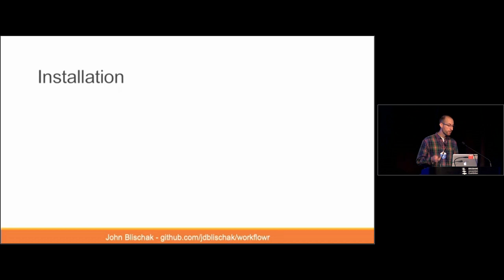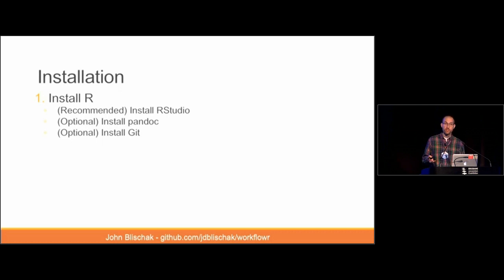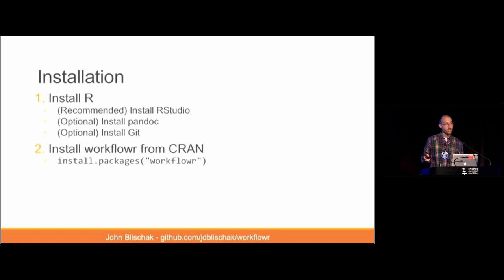To try out WorkflowR, in addition to R you'll need the document converter pandoc, which is easily installed if you've already installed RStudio — it comes shipped with it. Note that installing Git is optional, because the git2r package comes bundled with libgit2, a pure C implementation of Git, so you don't even have to install Git on your computer to test this out. You can install WorkflowR from CRAN. We have lots of unit tests and continuous integration set up for all three major operating systems, so if you experience any issues, please open an issue on GitHub.